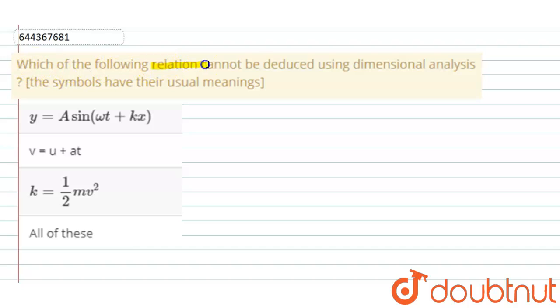Which of the following relation cannot be deduced by using dimensional analysis? The symbols have their usual meanings. Okay, so first let us understand what is the rule for dimensional analysis.